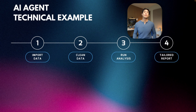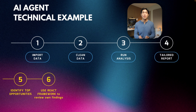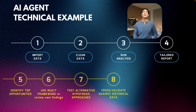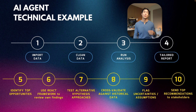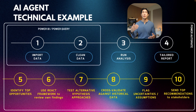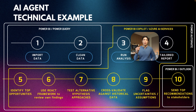Let's take our technical example to the next level. I already said that I use Microsoft apps a lot at work. Imagine this scenario: I want to build an AI agent that will not just import my data, clean it, analyze it and send out a report, but also identify top opportunities based on my data sets and use the REACT framework to review its own findings, test alternative analysis approaches, cross-validate against historical data, flag any uncertainties or assumptions, and then give me the top recommendations to be sent out to my stakeholders. I could use Power Automate to orchestrate everything, Power BI with Power Query to import and clean the data, Power BI Copilot and Azure AI services to do data analysis, find insights and perform reasoning and validation, and Power BI and Outlook for reporting and notifications.